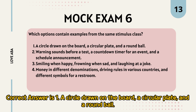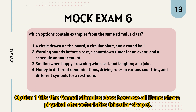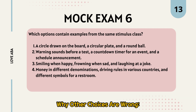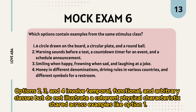The correct answer is 1 — a circle drawn on the board, a circular plate, and a round ball. Option 1 fits the formal stimulus class because all items share a physical characteristic: circular shape. Options 2, 3, and 4 involve temporal, functional, and arbitrary classes but do not illustrate a coherent physical characteristic shared across examples like option 1.